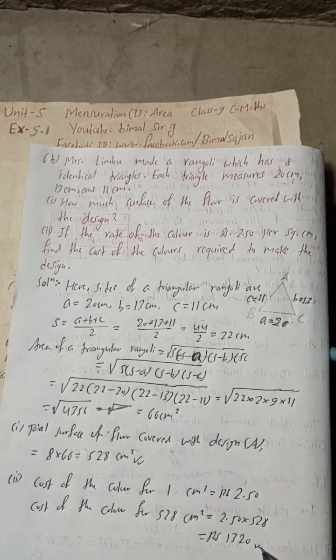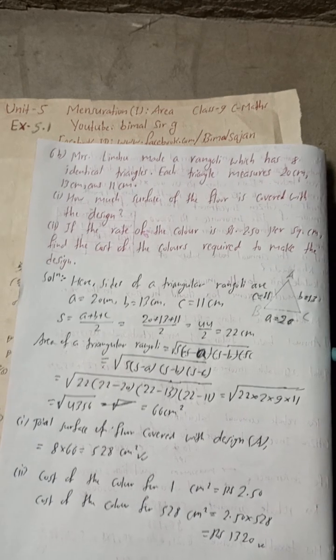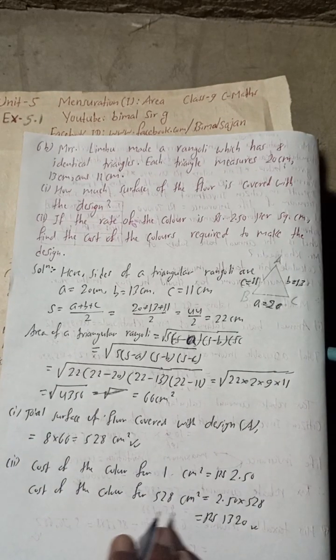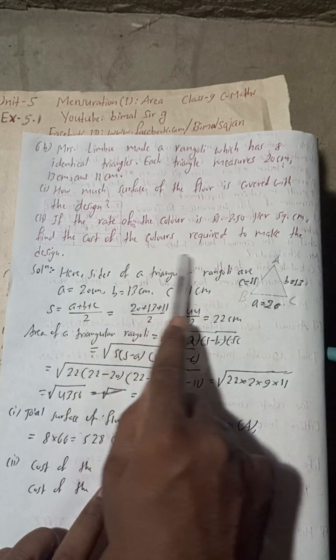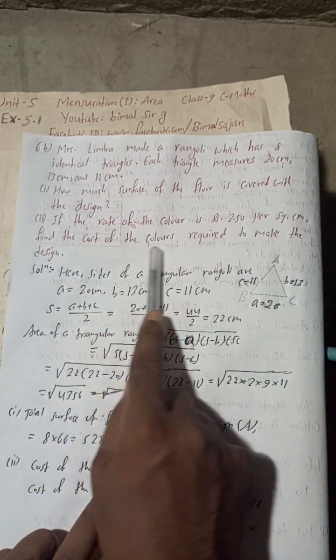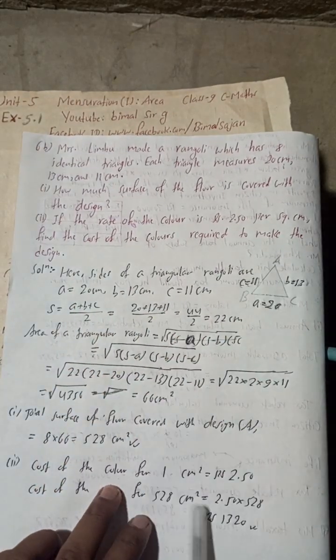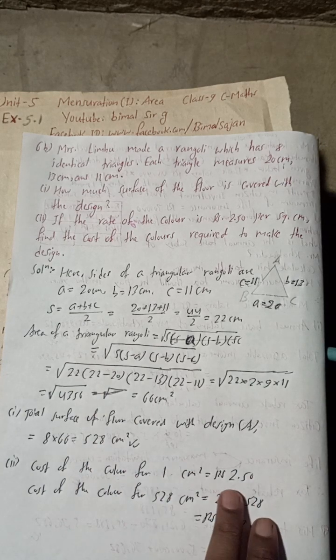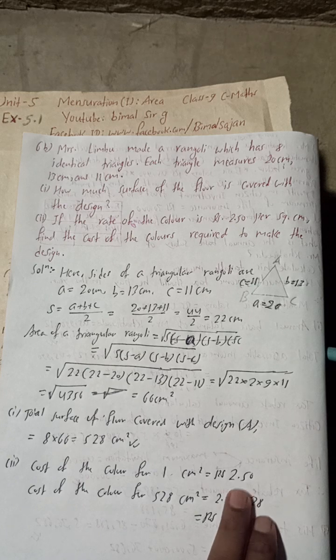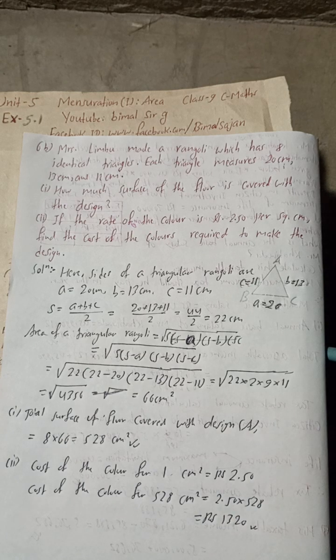I have solved this using the unitary method. You can directly write: the total cost of the design = total area × rate = 528 × 2.5. This is the solution.